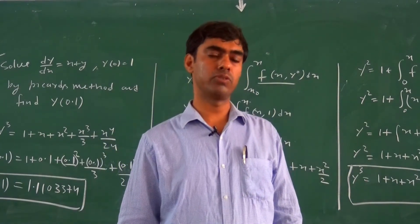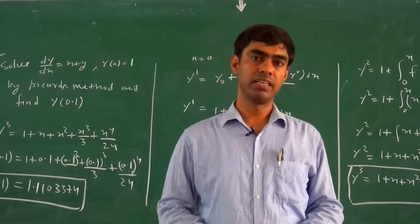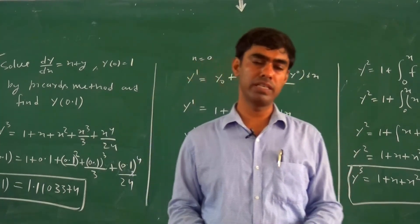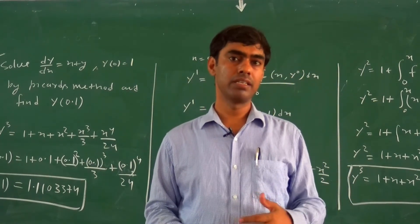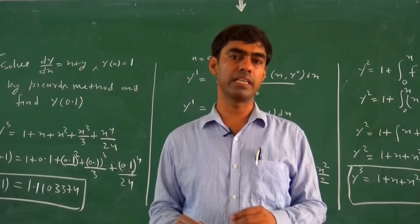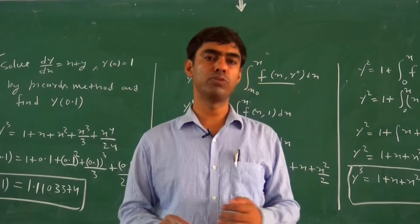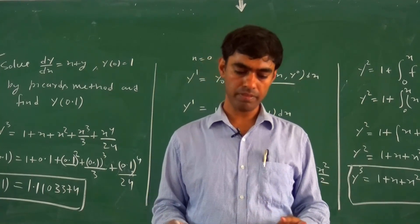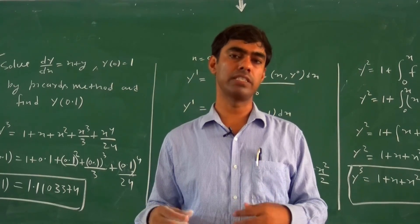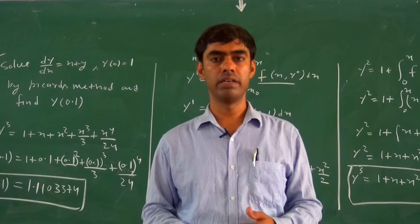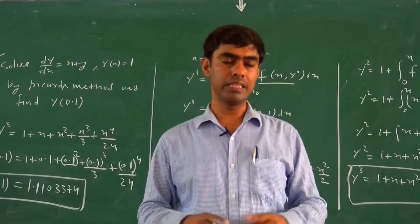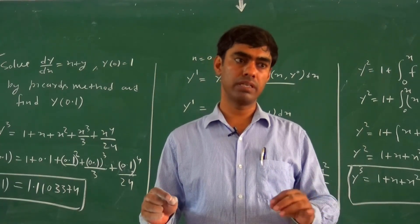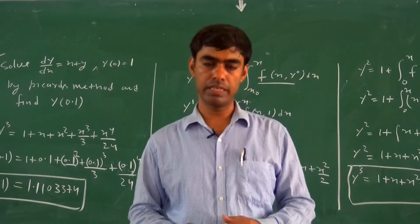This is Picard's successive approximation method. Note that this is not a totally numerical method — first we find an expression in terms of x, then we find the numerical value. Similarly, Taylor series solution method is also semi-numerical. Both methods first find a function in terms of x, then substitute values like x = 0.1. That is why these methods are not considered very suitable for implementing algorithms on computers. That is the end of this lecture.